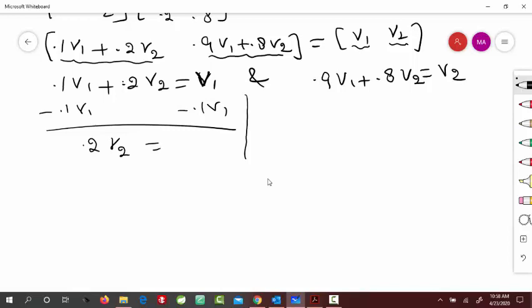This is V1, think of as a coefficient 1. So 1 minus 0.1 is 0.9, 0.9 V1. And if you solve in terms of V1, for example, so V1 would be equal to 0.2 by 0.9 V2.